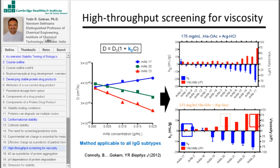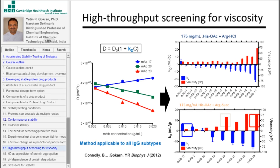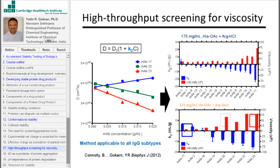High-throughput screening for viscosity. This parameter, this diffusional interaction parameter, we can use to predict the viscosity of antibody solutions.